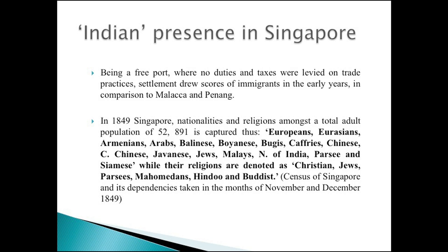In 1849 Singapore, looking at the census of Singapore and its dependencies, the population was 52,891. The categories used to describe the people present were actually quite detailed — including Europeans, Eurasians, Armenians, Arabs, Jews, Parsis, and Siamese — and their religious backgrounds as Christians, Jews, Parsis, Mohammedans, Hindus and Buddhists. Prior to independence, the categories used were much more detailed and specific, not the large homogenous categories that erase differences. From the 1970s onwards, we have the emergence of the CMIO categories — Chinese, Malay, Indian — which tend to erase precisely these kinds of differences recognized in earlier censuses.